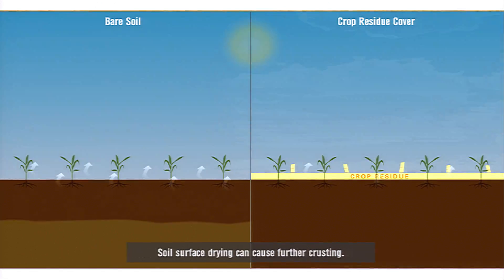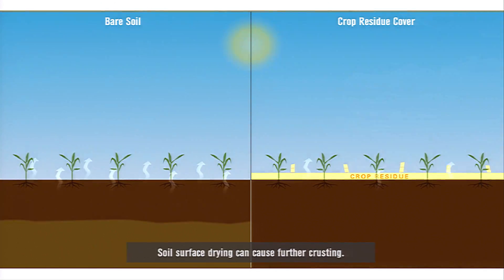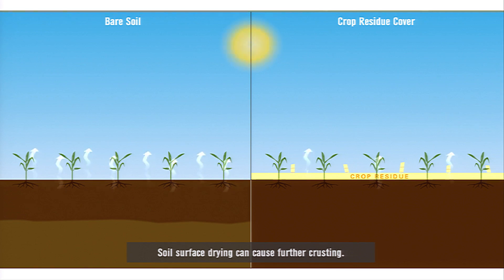As the sealed, bare soil surface dries out, it forms a crust which is compact and hard.